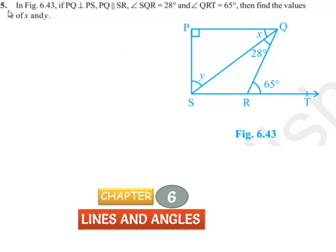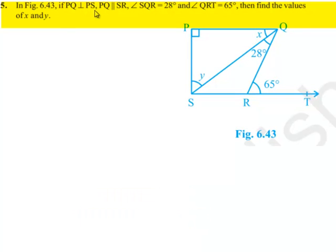Moving on to the fifth question. In figure 6.43, PQ is perpendicular to PS and PQ is parallel to SR. Angle SQR is given as 28 degrees and angle QRT is given as 65 degrees. Then find the values of X and Y.